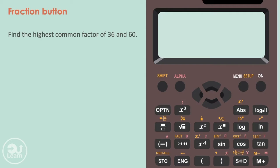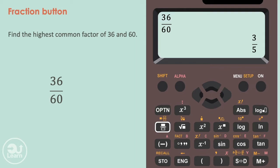For example, if we wanted to find the highest common factor of 36 and 60, let's represent this as a fraction. We place both these values in the fraction using the fraction button on our calculators. We press equals and the fraction completely simplifies to 3 over 5. To find the highest common factor, we ask ourselves: what number would you divide by 36 and 60 to get to 3 and 5?